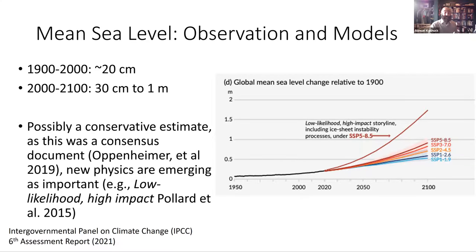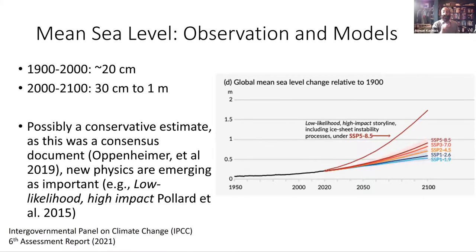The models in the most recent report suggest anywhere between 30 centimeters and one meter of sea level rise under what we might call normal worst case scenario situations by 2100. This is possibly still a conservative estimate — one, because it was a consensus document which produces pressure that Michael Oppenheimer calls to err on the side of least drama, but also because new physics are emerging as important for sea level science, separated out as low likelihood, high impact storylines, some of which we're going to be talking about today.